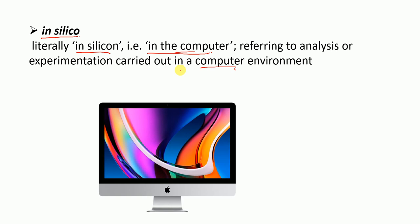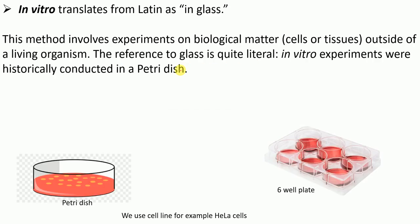Moving to the next topic: what are in vitro experiments? In vitro translates from Latin as 'in the glass.' Experiments are performed on biological matter — such as cells or tissues — outside of a living organism. The reference to glass is quite literal; in vitro experiments were historically conducted in a petri dish.